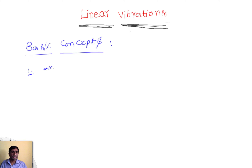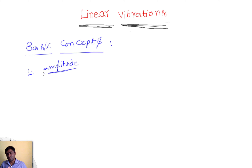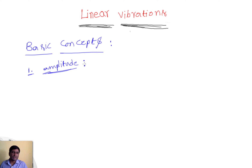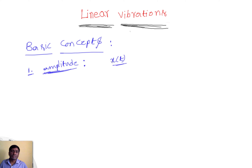First is amplitude. Amplitude is the distance traversed by the system from its mean position. The maximum amplitude or maximum displacement of any system from its mean position should be calculated so that we can take precautions in terms of providing damping to this system. To calculate amplitude, we form the equation of motion in terms of x, and if we know x(t), we can automatically calculate the amplitude at different times.